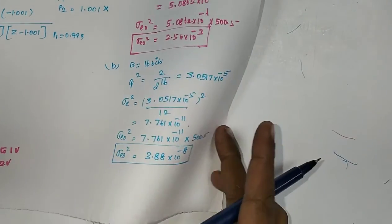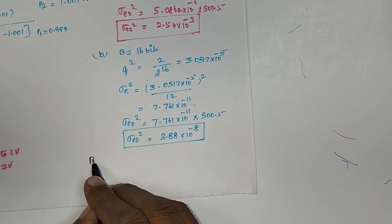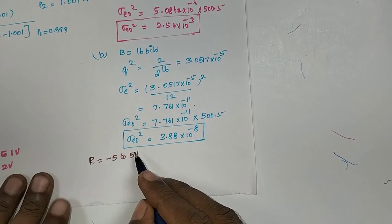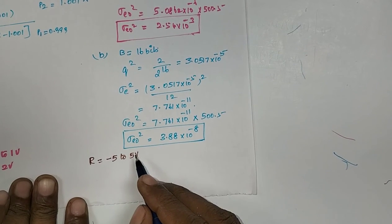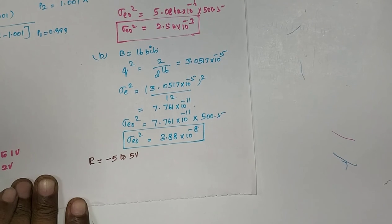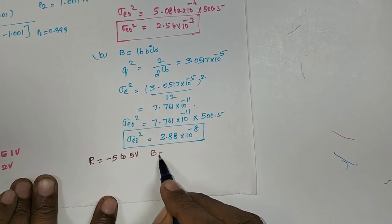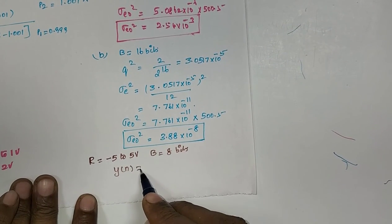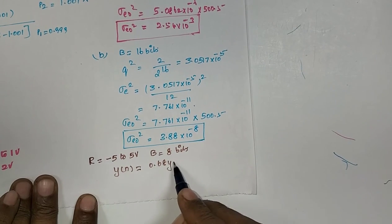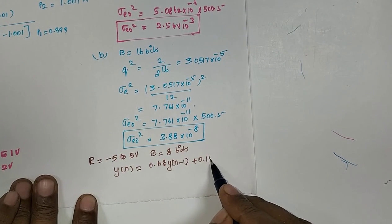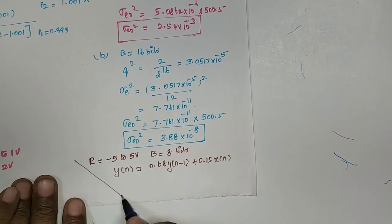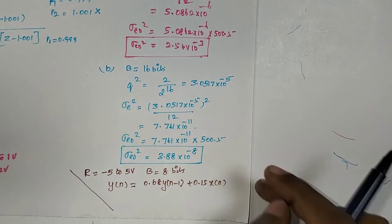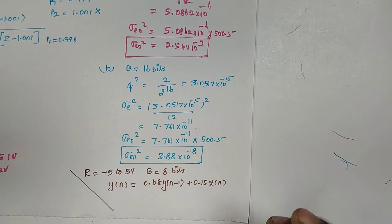Assignment problem: take range from −5 to +5 V, number of bits = 8, and the equation y[n] = 0.68·y[n−1] + 0.15·x[n]. Solve it and post the answer in the comment section. For more problems, subscribe to our channel. Thanks for listening.